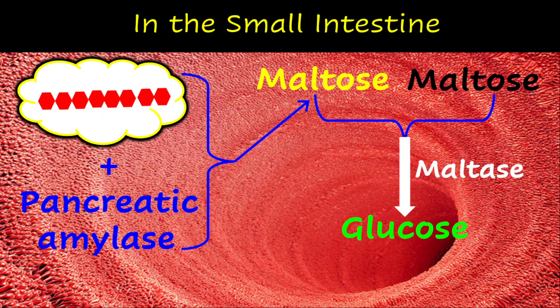The glucose is now able to be absorbed by the villi in the small intestine and travel through your bloodstream. In fact, it will go to the liver through the hepatic portal vein.